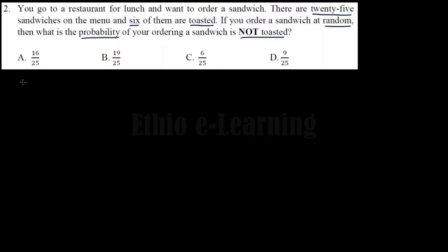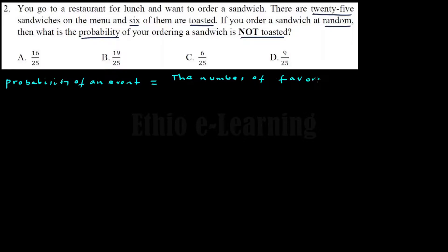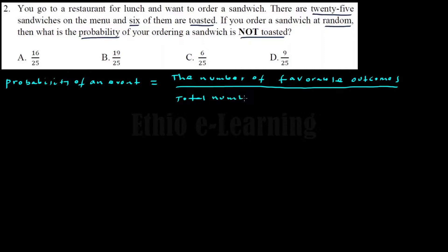The probability of an event is the number of favorable outcomes divided by the total number of possible outcomes.